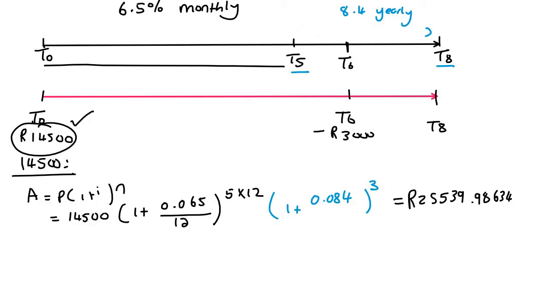But be careful, that 3,000 only gets taken out over here. So the interest rate from there until the end is only going to be the 8.4% yearly, and it's only going to be for two years. Okay, so we're then going to use the same formula.